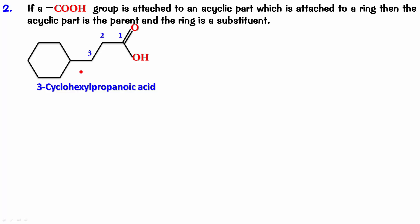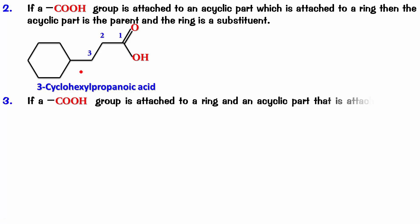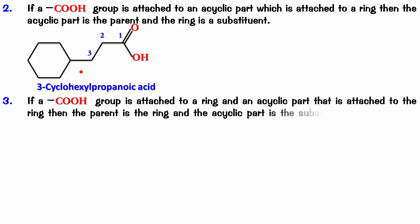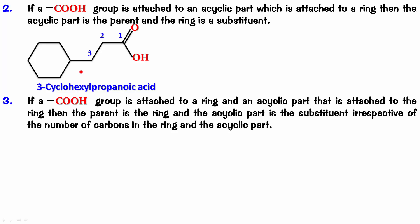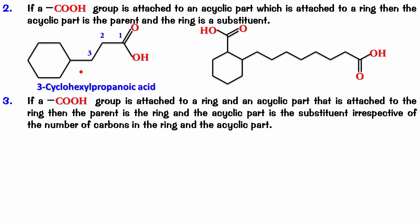Then comes the situation where both the ring and the acyclic part carry a COOH group. In that event, the ring part is taken as the parent and the acyclic part is taken as a substituent — irrespective of the number of carbons in the ring and the acyclic part. So the cyclic part becomes the parent and the acyclic part becomes the substituent.